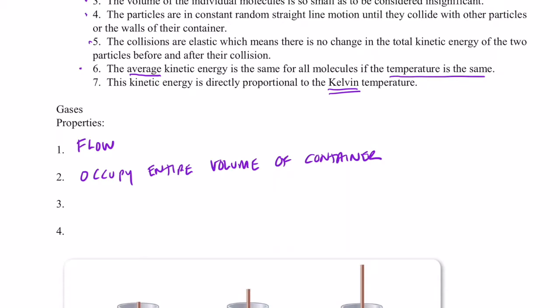Number three, most of the volume of a gas is occupied by empty space. So gases have a very low density, much, much lower than the density of the other two states of matter, liquids and solids. Once again, most of the volume occupied by a gas is empty space. The individual gas particles themselves, their volume is essentially negligible in contrast to the volume of the container that they're in.